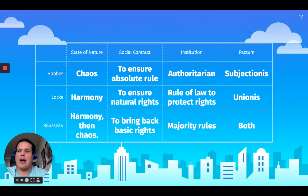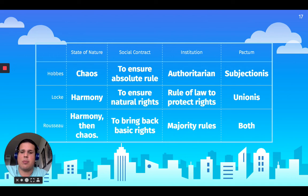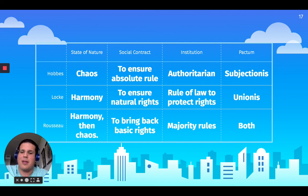So a quick summary. The state of nature for Hobbes is chaotic; for Locke it is harmonious; and for Rousseau it is harmonious, but because of envy and capitalism there's going to be chaos. In terms of the social contract: for Hobbes, we need absolute rule; for Locke, we need to ensure natural or Lockean rights; and for Rousseau, we need to bring back basic rights. In terms of the institution: for Hobbes, it's an authoritarian institution with absolute power; for Locke, we have a rule of law to protect rights; and for Rousseau, it's majority rules. A combination of Locke and Rousseau's social contract theory is the basis for a democracy.